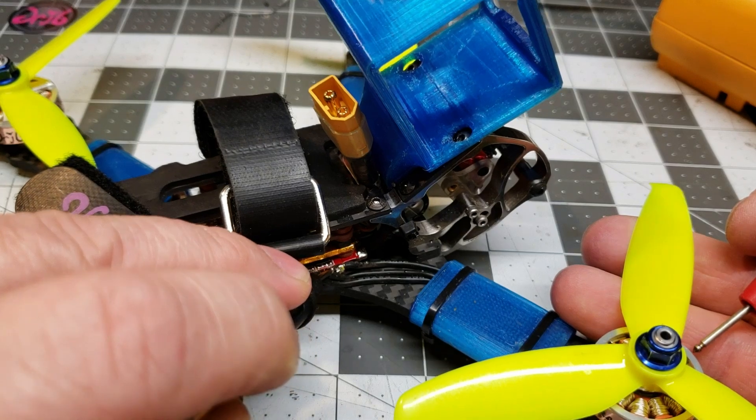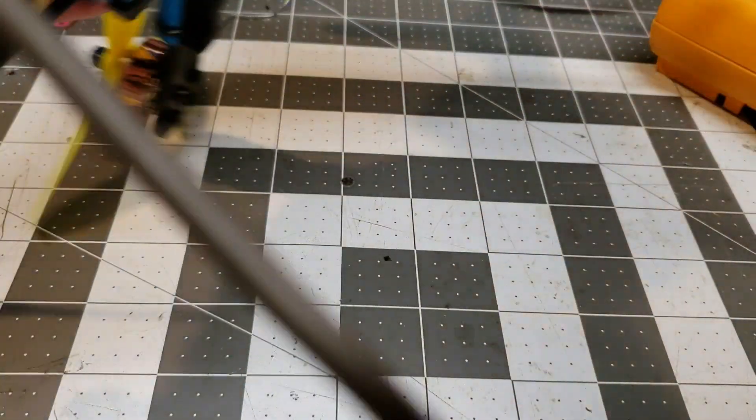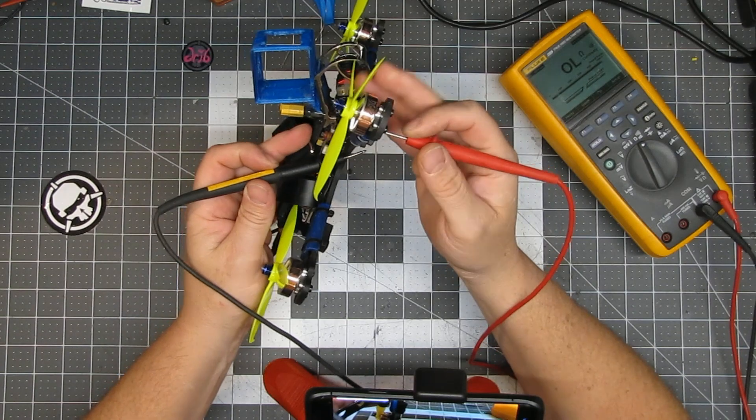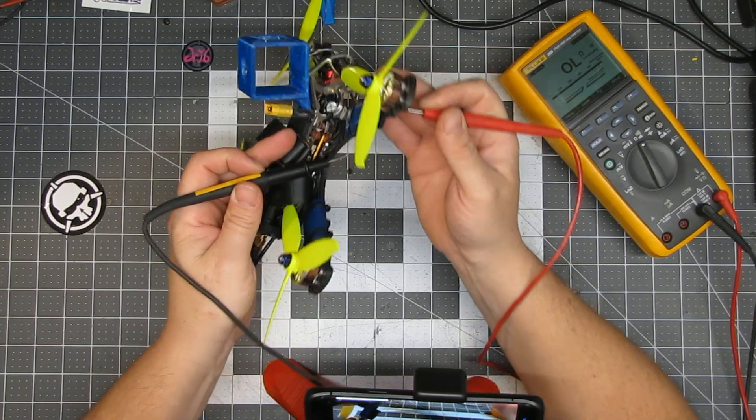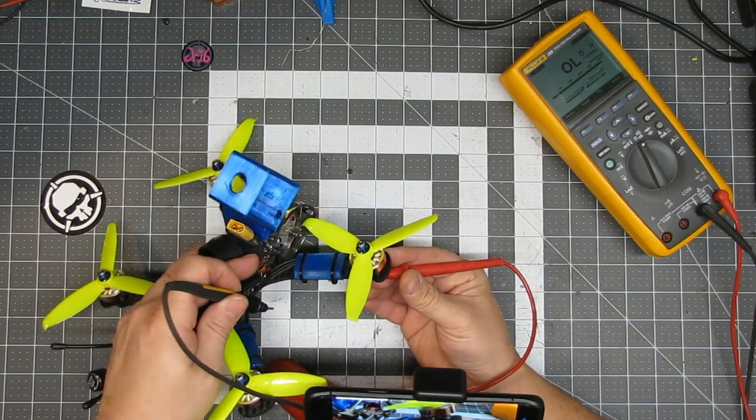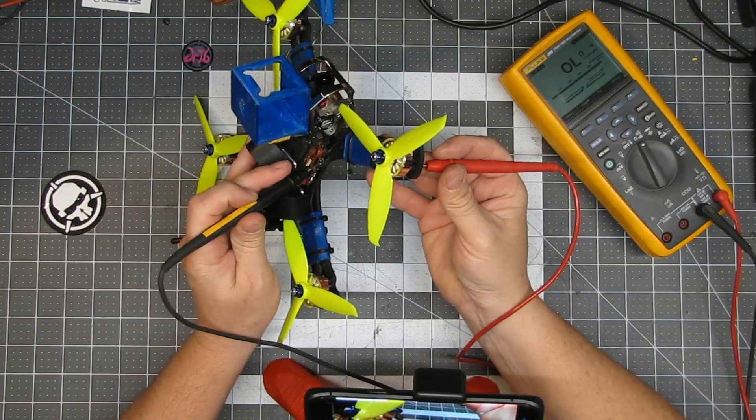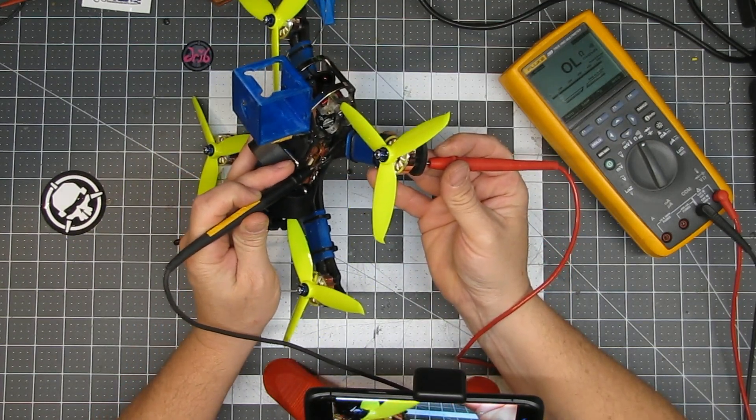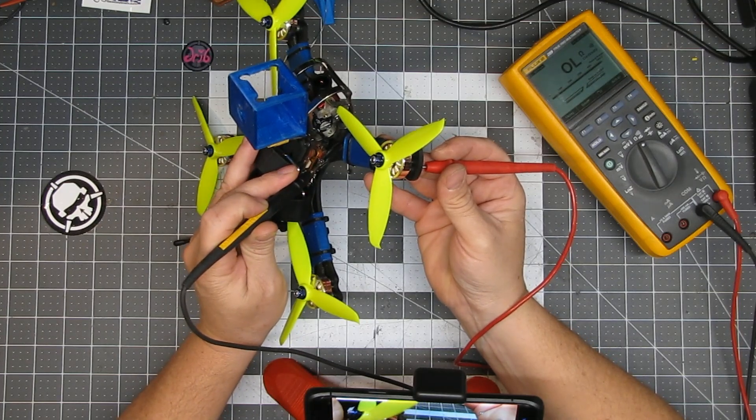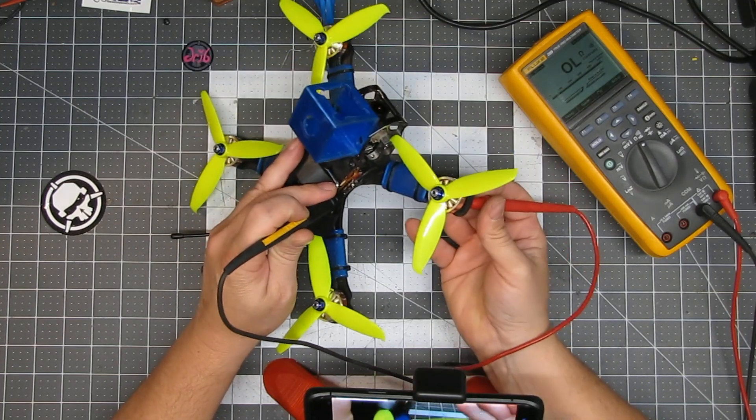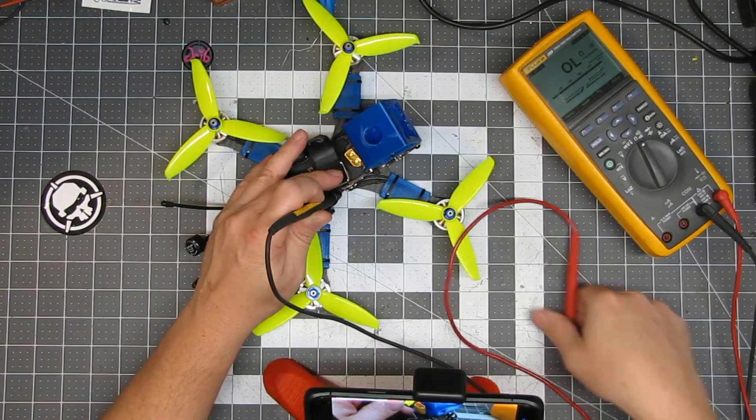So we're going to touch that and put one probe on the screw like we have here, and then we're going to put the other probe on the ESC wherever that motor is soldered to. And you should not get continuity if you have continuity, you have a short.